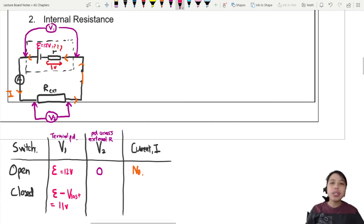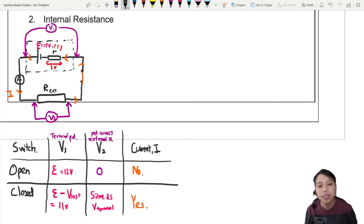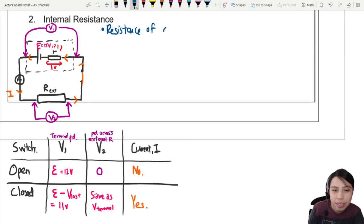So we can say now this will be the EMF minus your lost volt. In this case, or this example, if you lose one volt, then you only have 11 volts left. Because 12 minus one is 11. How about the external resistor? So once again, what comes out of the battery is supplied to the external load or external circuit. So you'll be the same. E minus V lost. Same as terminal potential difference, V1. And is there current flowing through everything? Yes. So this one is a nice summary of what you will observe.